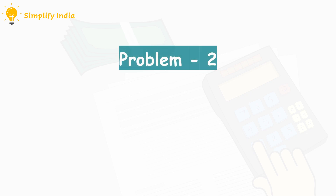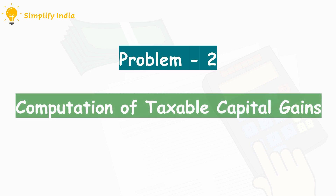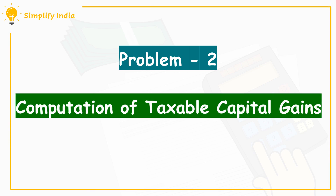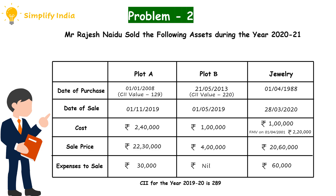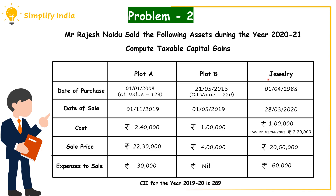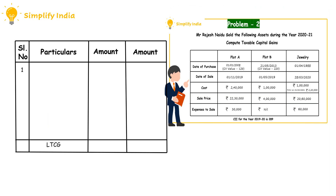Let us move on to Problem 2, where we are going to learn the computation of taxable capital gains for different capital assets. From the given problem, we have to calculate the capital gains of Mr. Rajesh Naidu for the assessment year 2020-21 for his different capital assets: Plot A, Plot B, and jewellery. As the date of purchase of Plot A is 1st January 2008, we can say that Plot A is a long-term capital asset.